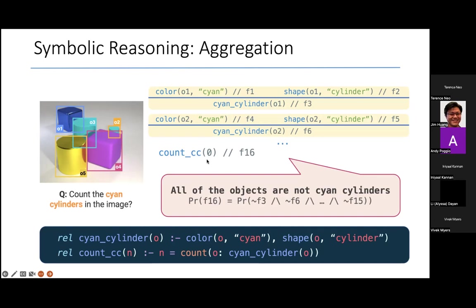Let's just look at one of the outputs, which is the fact that there are zero cyan cylinders in this image. And let's give the Boolean variable a name F16. Then the probability that there are zero cyan cylinders is simply that none of these facts is true. What are these Boolean variables? Each of them corresponds to deriving that the corresponding object is a cyan cylinder.